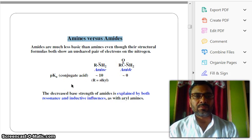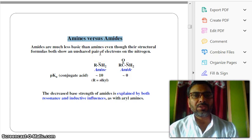If you look at the values of pKa, it is 10 and 0. This data shows that amides are much less basic than amines, even though their structural formulas both show an unshared pair of electrons on the nitrogen. Can you imagine? Can you have the reasons?